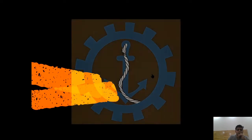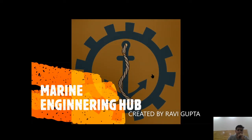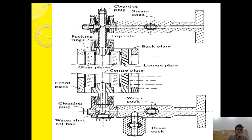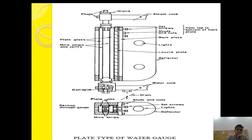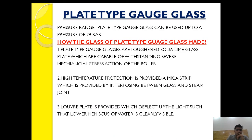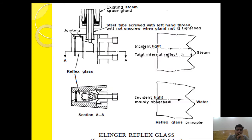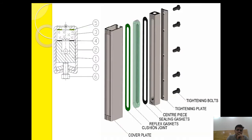Hello friends, welcome to Marine Engineering Hub. This is your narrator Ravi Gupta. In today's topic I'm going to explain the types of gauge glass. After that we'll see the various types, and I will explain how the plate type gauge glass is constructed, why it is constructed in such a way, and where it is used. After that I will explain where the reflex type gauge glass is used and how it is constructed.